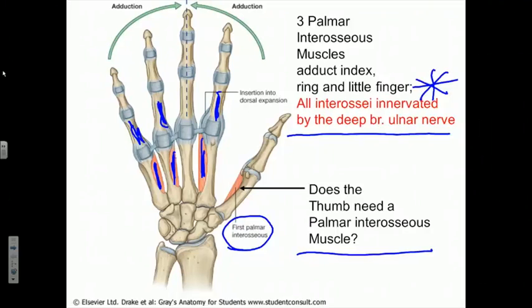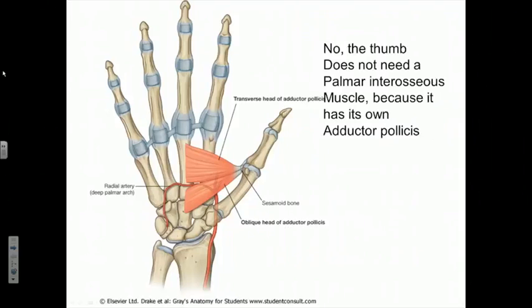The adductor pollicis is a very broad muscle with attachments to the third metacarpal and the capitate bone in the wrist. It gives us the ability to adduct our thumb, largely by adducting at the carpometacarpal joint and also acting at the metacarpophalangeal joint. This muscle shares the innervation of all the other interosseous muscles — the deep branch of the ulnar nerve.